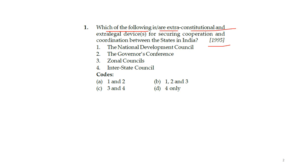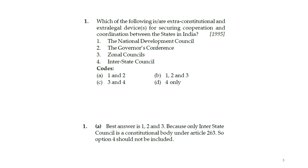The first question of 1995: which of the following are extra-constitutional, extra-legal devices for security cooperation and coordination between the states in India? The options include the National Development Council, Governor's Conference, General Council, and Inter-State Council. The answer is A — NDC and Governor's Conference.